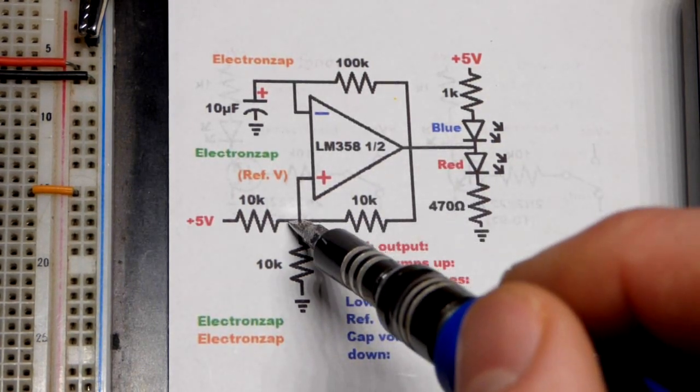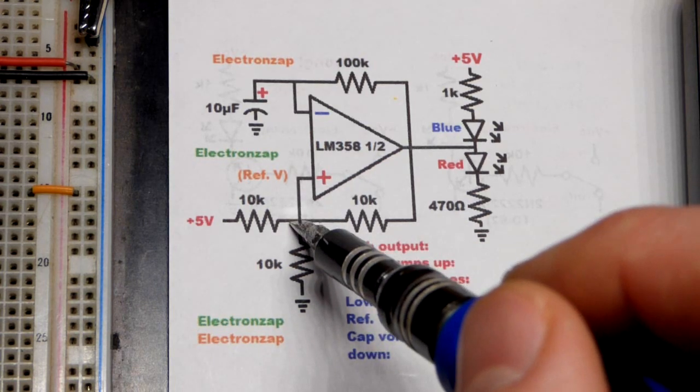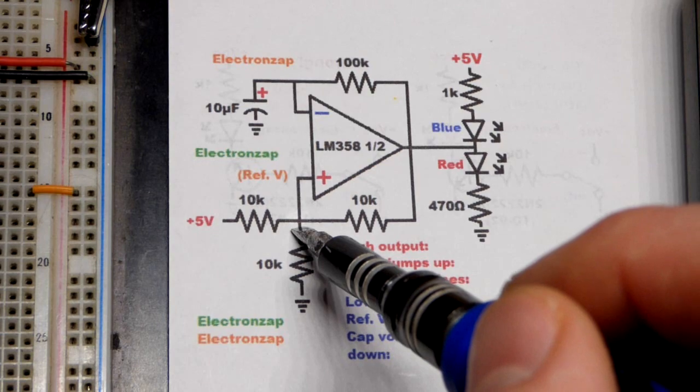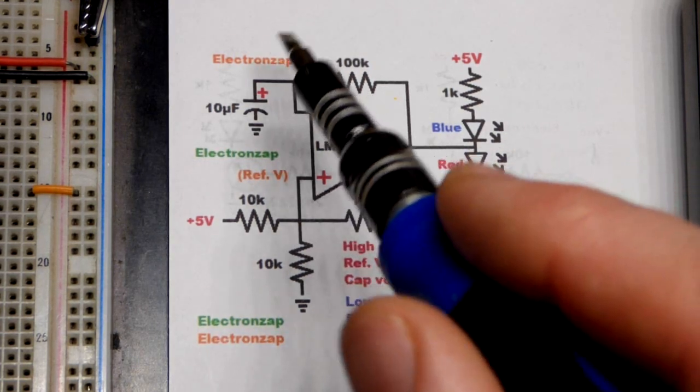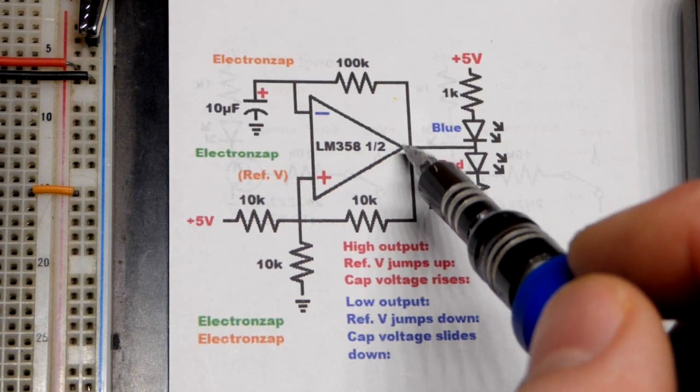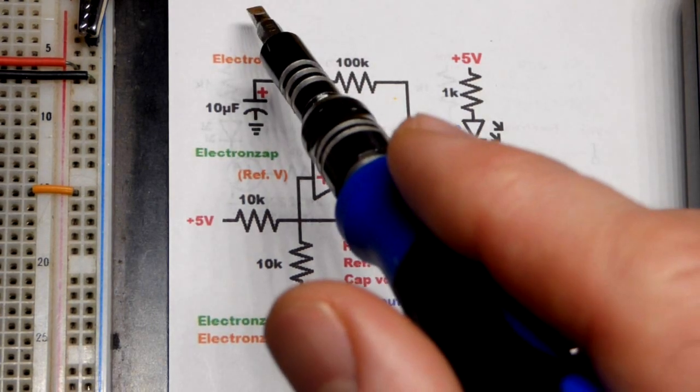That's going to drag down the voltage at this point here. So it's going to drop below 2.5 volts at the non-inverting input. And so we got a lower voltage. That's a higher voltage. And remember, this is the opposite of what we got there. So we got our higher voltage.